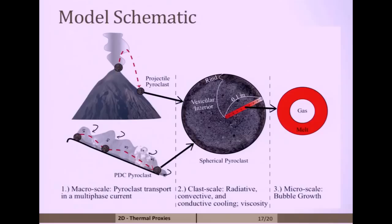The Lagrangian component of that model tracks those particles through the flow, their interaction with the current. We use just a 1D heat equation that we solve. We look at the cooling of these clasts, the radiative and convective heat transfer. This is coupled to a viscosity model. The viscosity of these particles will change depending on how cool the clasts are, their composition, which we know from other measurements in the field, and also the loss of water, which occurs when you grow the bubbles.